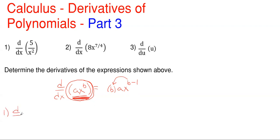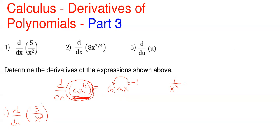So number one, we are taking the derivative with respect to x of the expression 5 over x squared. This is not really in the form of ax to the power of b just yet, so let's rearrange. Anytime you have 1 over x to the a, that is simply saying x to the power of negative a, because when it's in the denominator the exponent becomes negative. So we're going to take the derivative with respect to x of 5 times x to the minus two.